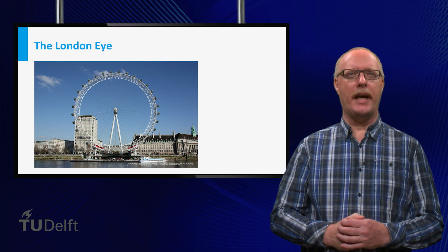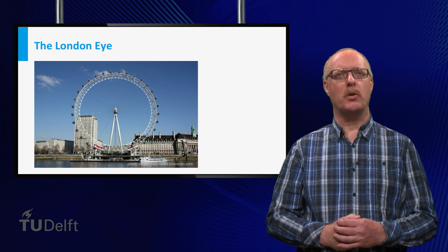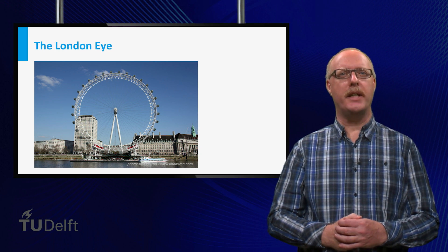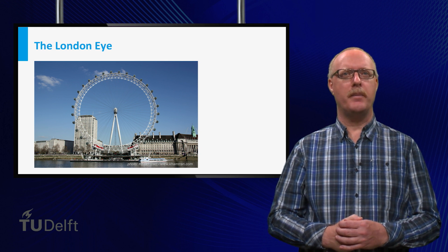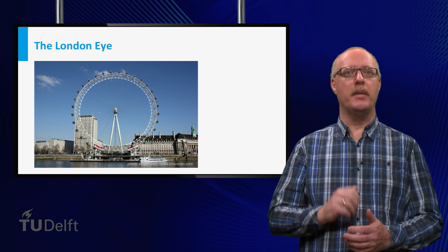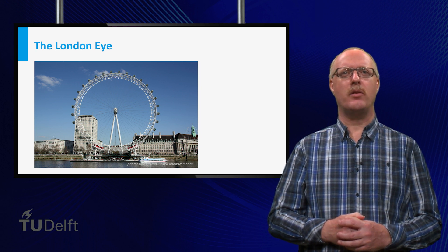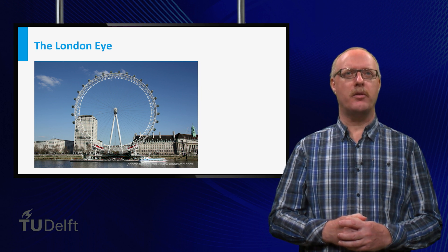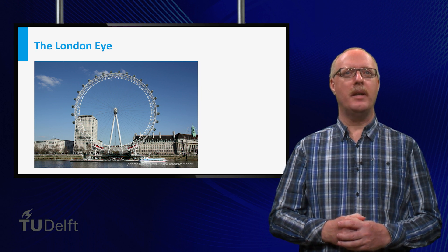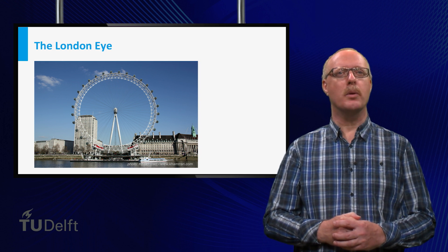Here we see the London Eye, also called the millennium wheel, since it was built at the occasion of the millennium change at the year 2000. At that time it was the world's largest ferris wheel. Its height is 135 meters, it contains 32 closed cabins, and it takes 30 minutes for one tour.